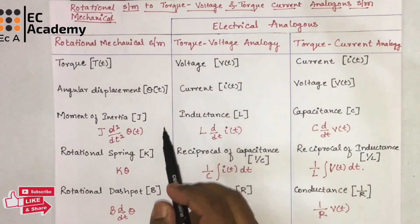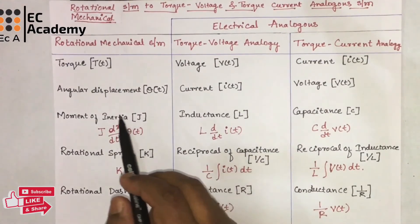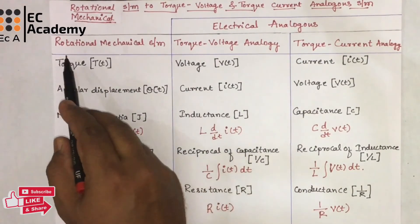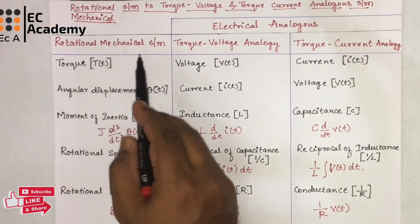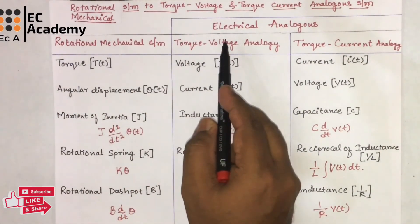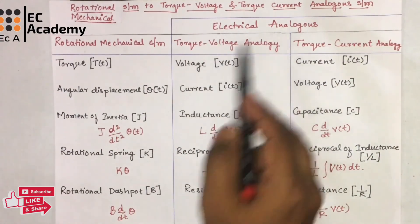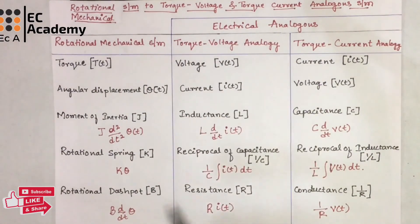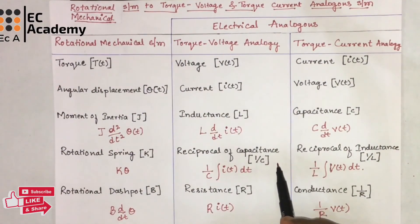This is the brief explanation to convert a rotational mechanical system to an equivalent electrical analogous system. Hope you have understood the topic. Thank you.